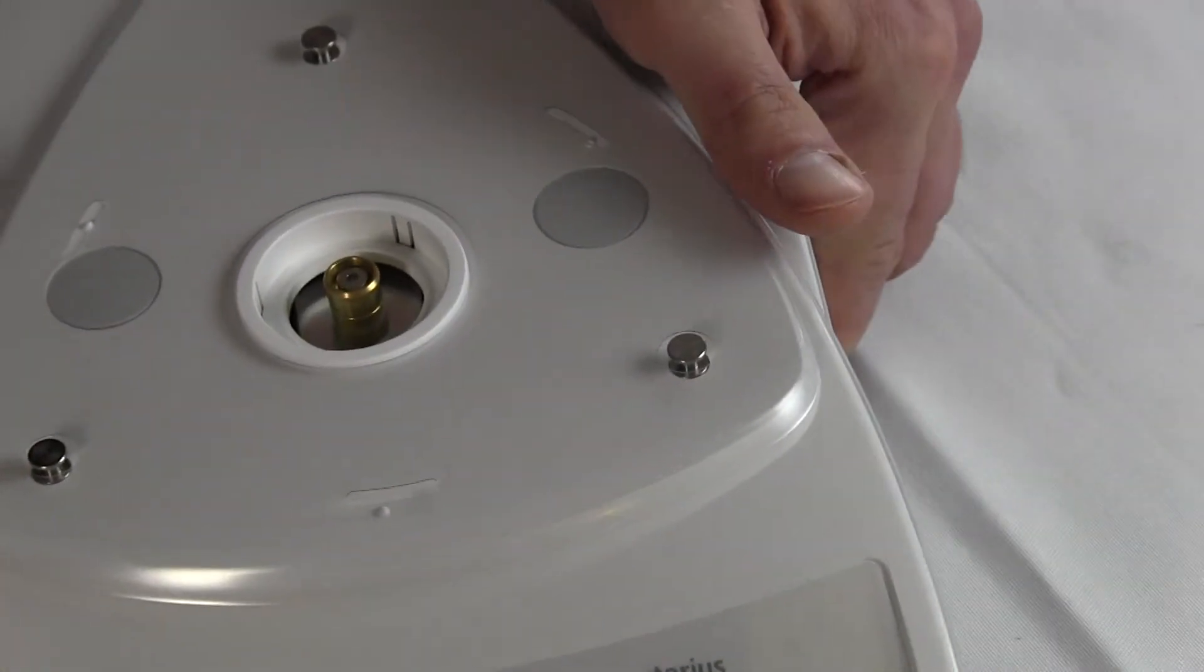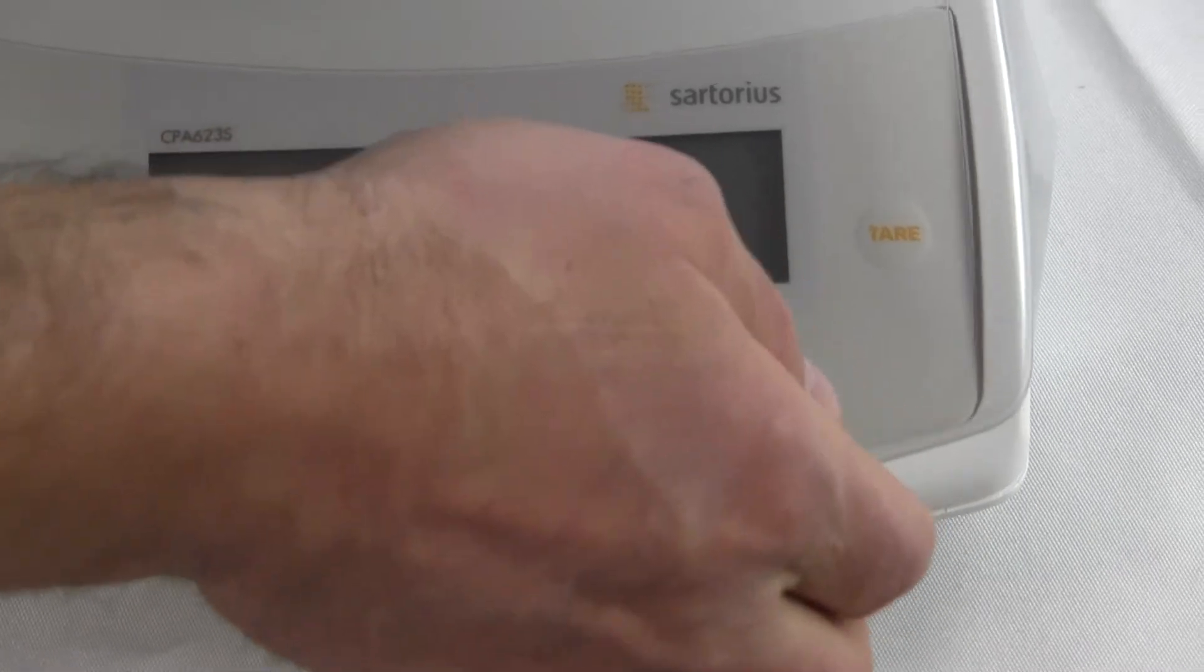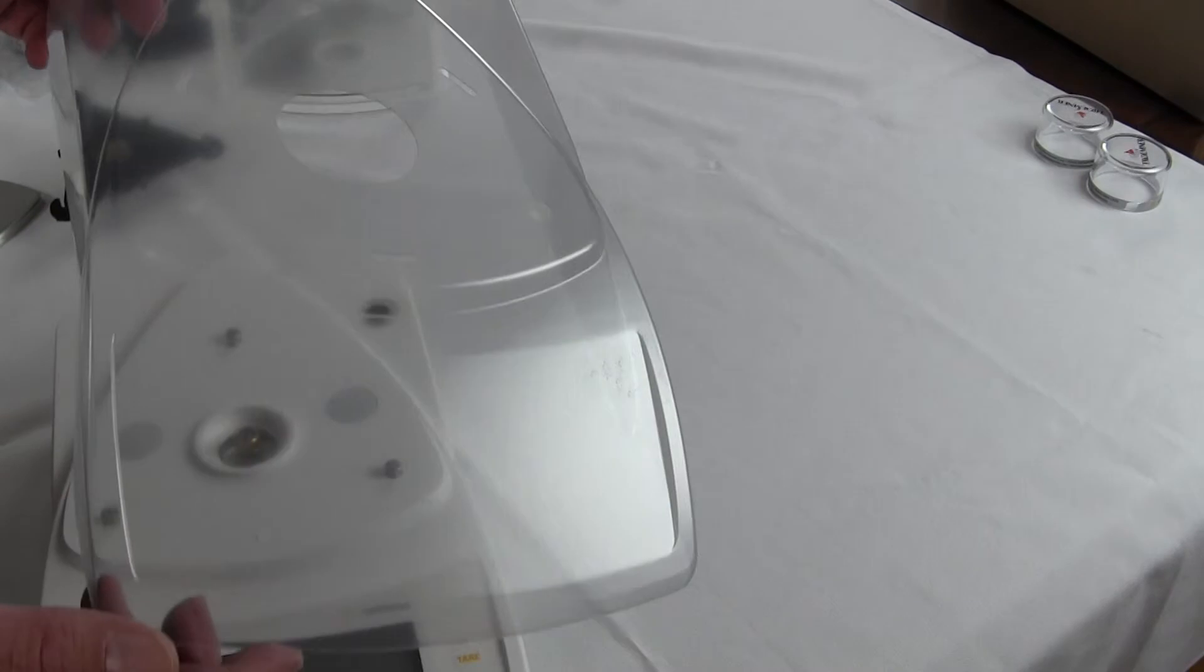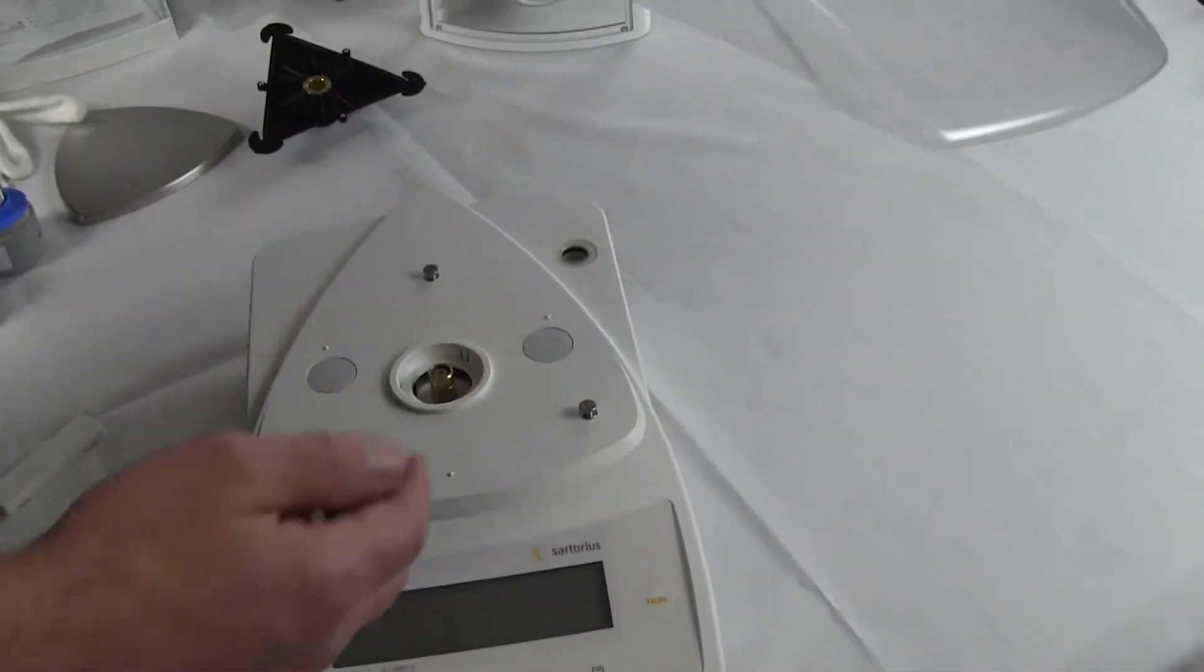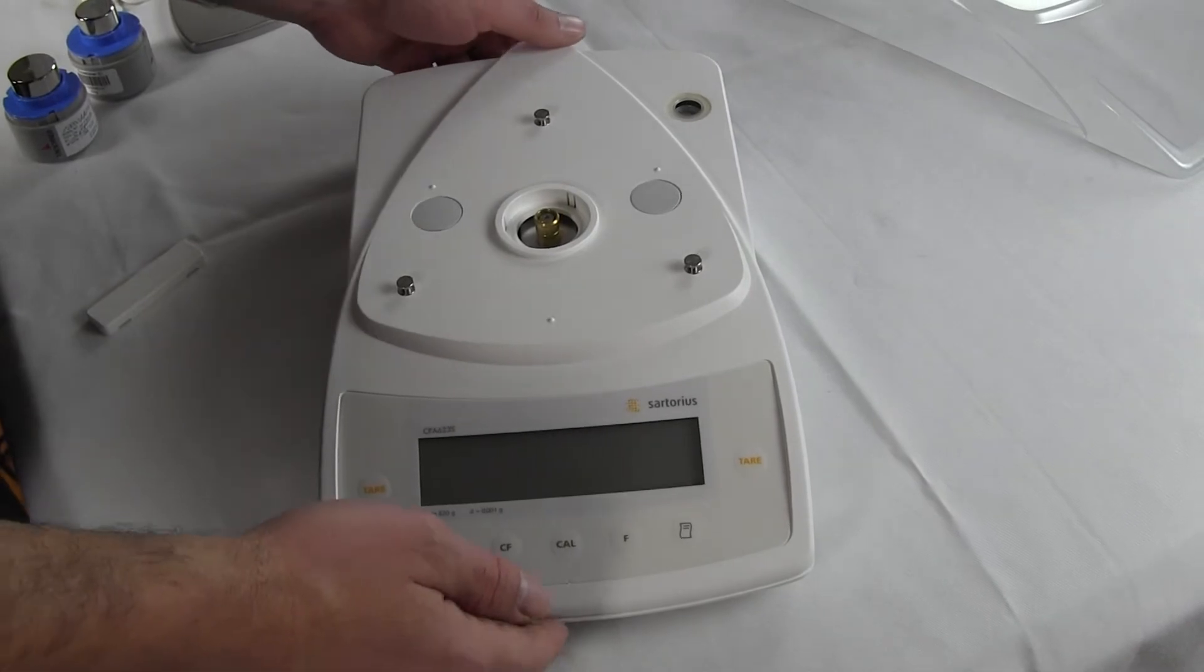The balance comes standard with one of these splash guards. You can buy additional units. They're accessories, but it comes standard when you buy a balance on the CPA, you'll get one of those splash guards.